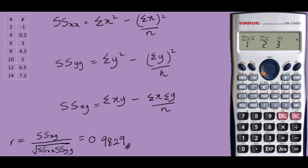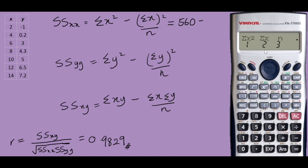I would start with sum of x squared, which is 560. Then press Shift 1 again to find the sum of x — selecting 2 — which gives 56. And n was 7.